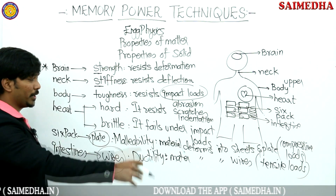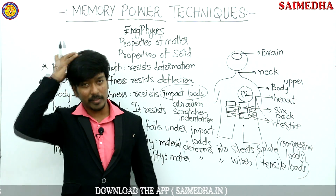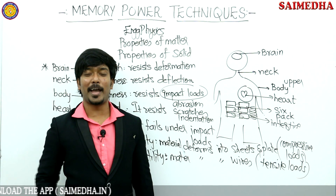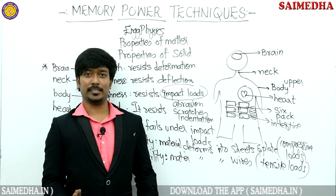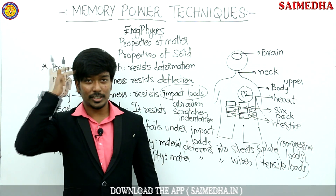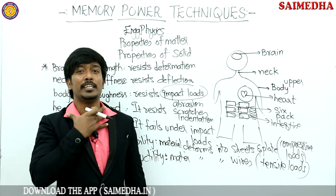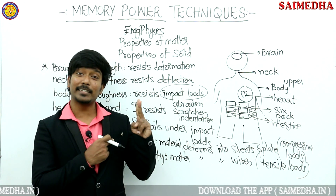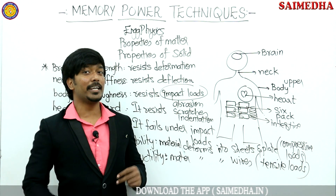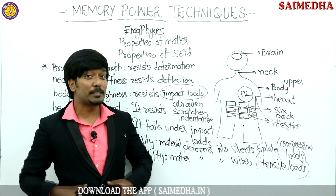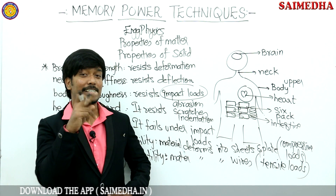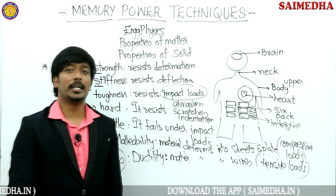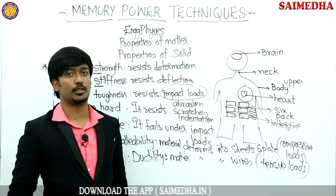Let's revise the properties. Brain → strength; neck → stiffness; body → toughness; heart → two properties: hardness and brittleness. Six-pack → plates → malleability. Intestines → wires → ductility. This is how you can remember the names and definitions.